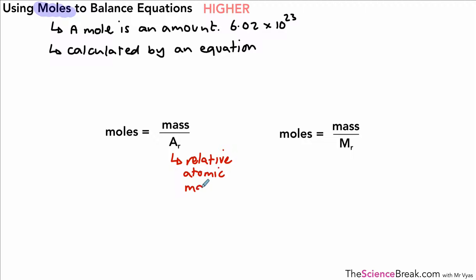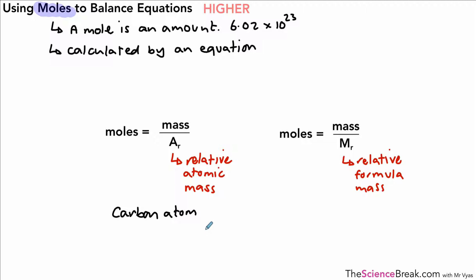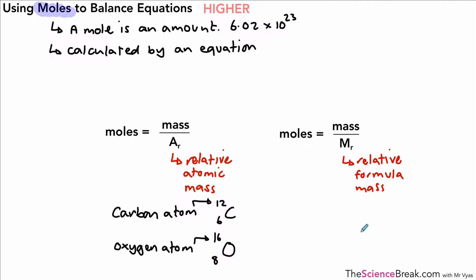We might also need to use a slightly different equation: moles equals mass divided by relative formula mass. Which one you use depends on the substance. If you're looking at atoms, use relative atomic mass. For example, carbon has a relative atomic mass of 12, and oxygen has a relative atomic mass of 16 — both found as the top number on the periodic table.